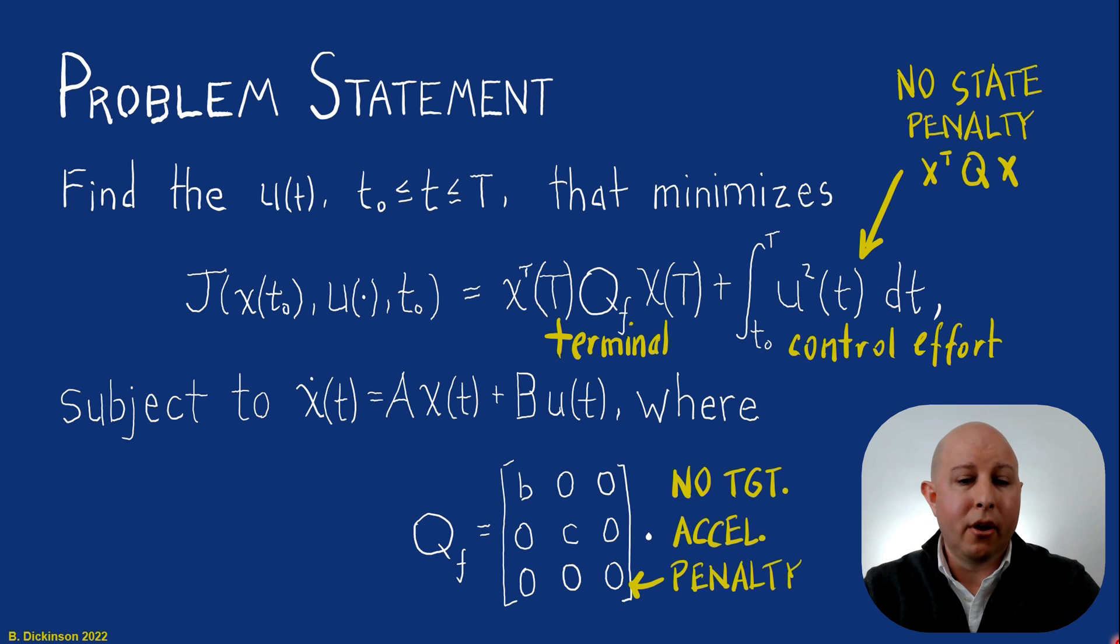So along the diagonal, also zero penalty on AT. We do not penalize target acceleration. Why? Because we can't control target acceleration. Think back to that matrix of ODEs. Z3 is not controllable.